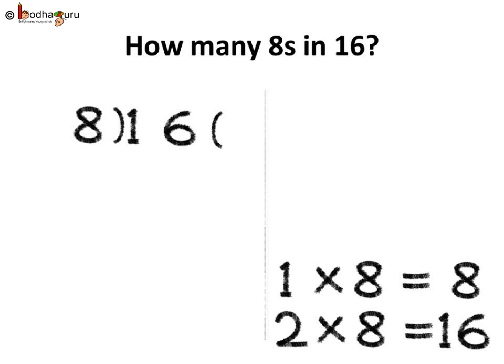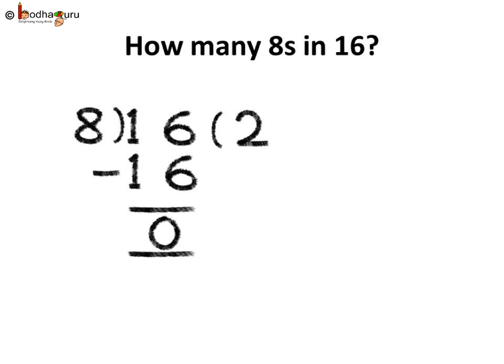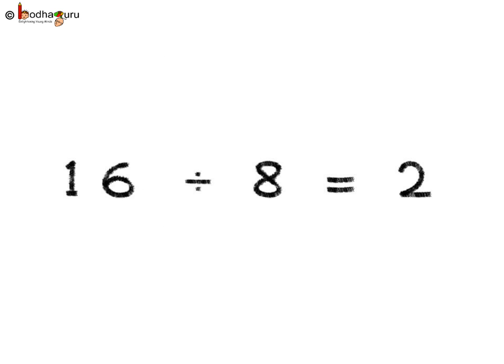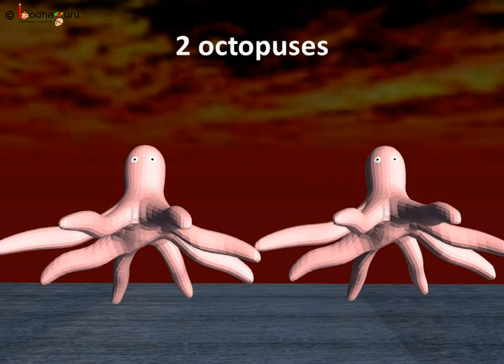Let us divide 16 by 8. Using the table of 8: 1 8's are 8, 2 8's are 16. So, 16 divided by 8 is equal to 2. That is, 2 octopuses are there. See, after removing the board, we can see 2 octopuses.